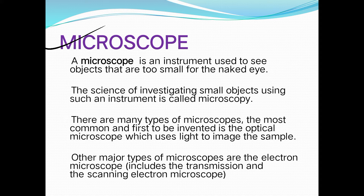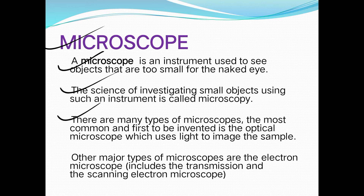A microscope is an instrument used to see objects that are too small for the naked eye. The science of investigating small objects using such an instrument is called microscopy. There are many types of microscopes; the most common and first to be invented is the optical microscope, which uses light to image the sample.